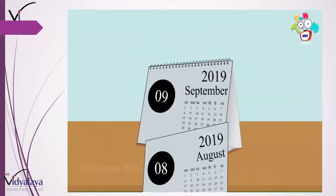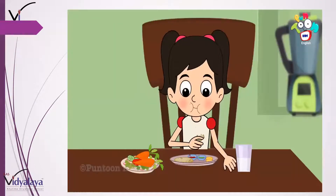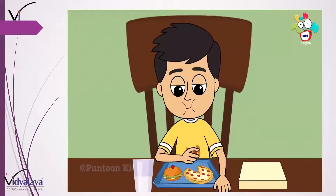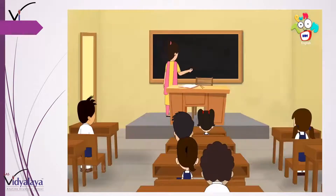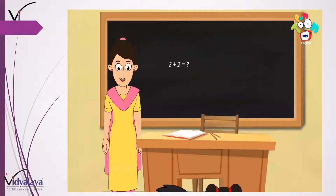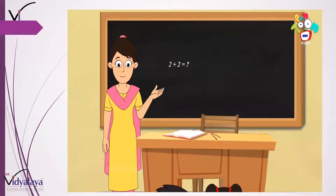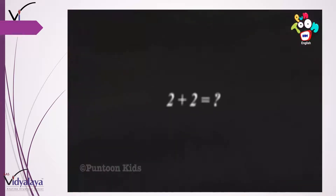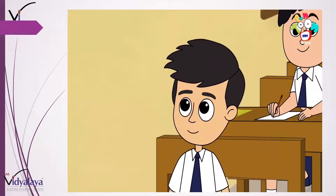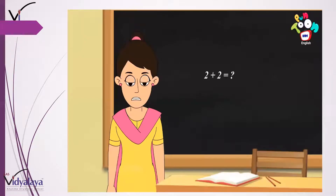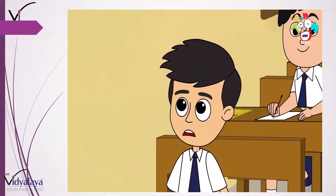Many days passed. Himani started eating fruit and vegetables daily, and Himanshu, like before, ate only pizza and burger. One day, Himanshu's teacher asked him in school: 'Himanshu, come on, solve the question on the blackboard.' When Himanshu looked at the blackboard, he found everything very blurred. He rubbed his eyes and looked once again, but still he found everything blurred.